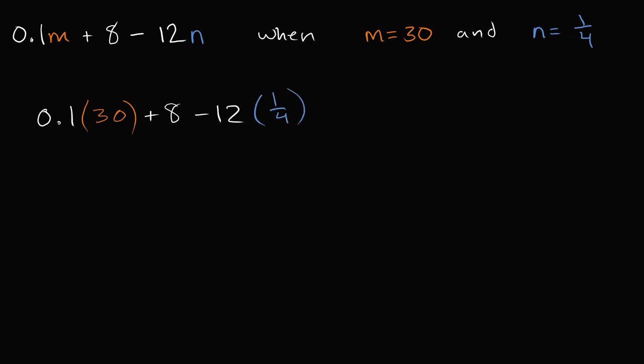So what is 1 tenth? This right over here is 0.1, that's the same thing as 1 tenth of 30. Well, 1 tenth of 30, that's going to be 3. So this part is 3.